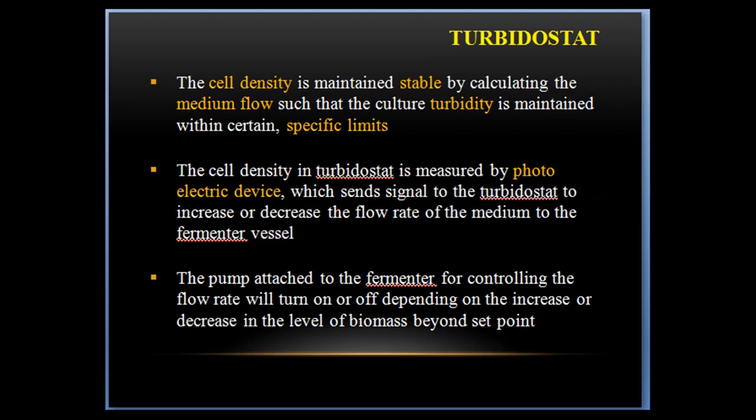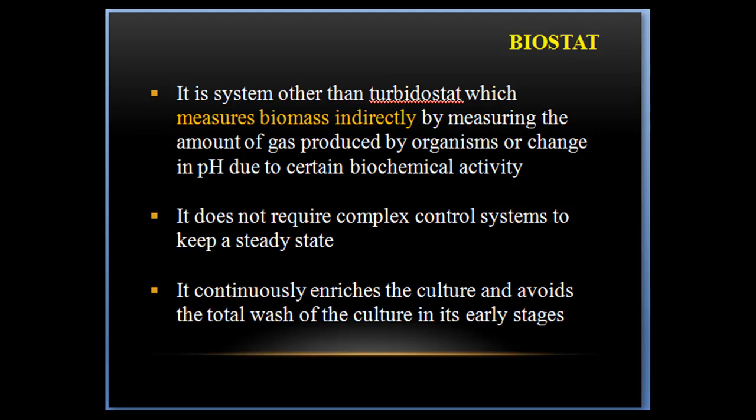Now, the turbidostat. The cell density is maintained stable by regulating the medium flow such that the culture turbidity is maintained within certain specific limits. The cell density in the turbidostat is measured by a photoelectric device which sends signals to the turbidostat to increase or decrease the flow rate of medium to the fermenter vessel. The pump attached to the fermenter for controlling the flow rate will turn on or off depending on the increase or decrease in the level of biomass beyond the set point.